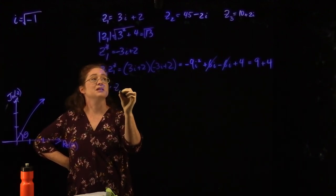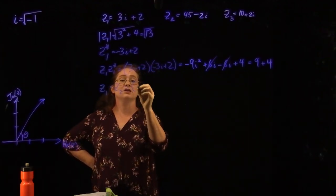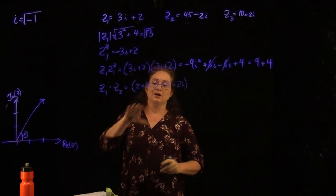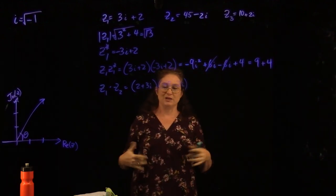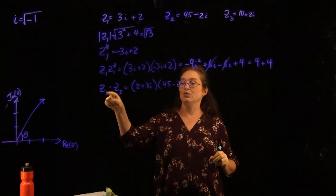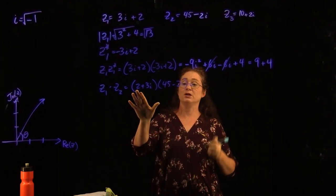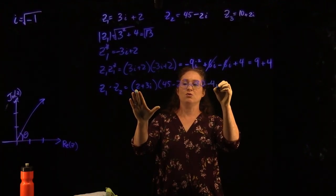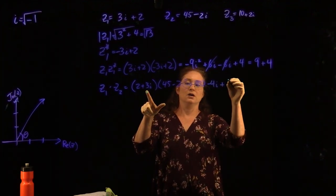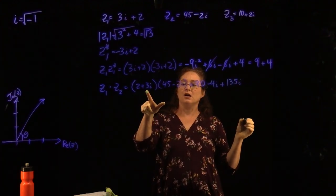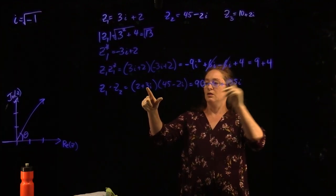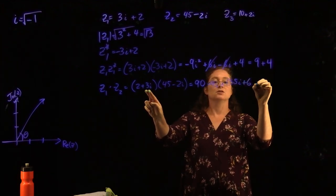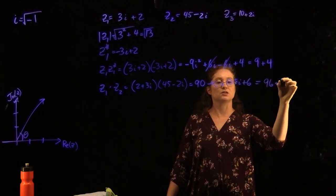Let me do z1 times z2. That is 2 plus 3i times 45 minus 2i. Multiplying everything out: 2 times 45 is 90, then minus 4i plus 135i, and 3i times negative 2i gives positive 6 since i squared is negative 1. So this gives me 96 plus 131i.